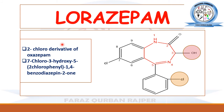Lorazepam is said to be the 2-chloro derivative of oxazepam, because it contains an additional chlorine at the second position of the phenyl ring at the fifth position of the diazepine. First draw the oxazepam structure — ring nucleus with hydroxyl at position 3, ketone at position 2, chlorine at position 7 — then add an additional chlorine at the second position of the phenyl ring. The chemical name is 7-chloro-3-hydroxy-5-(2-chlorophenyl)-1,4-benzodiazepine-2-one.